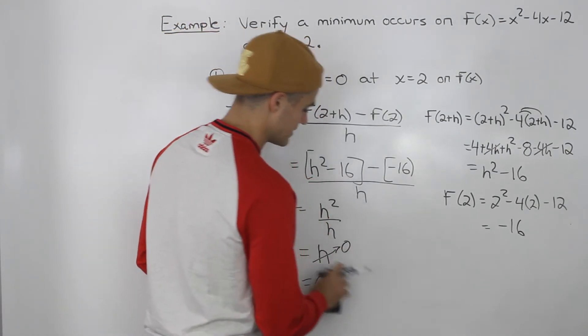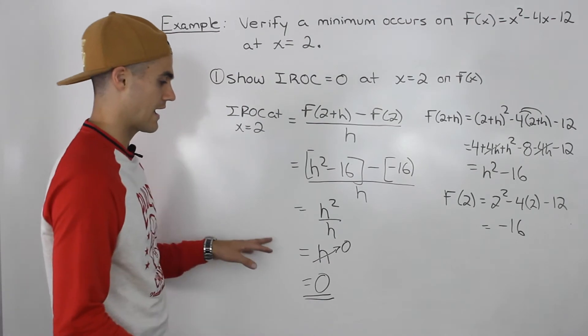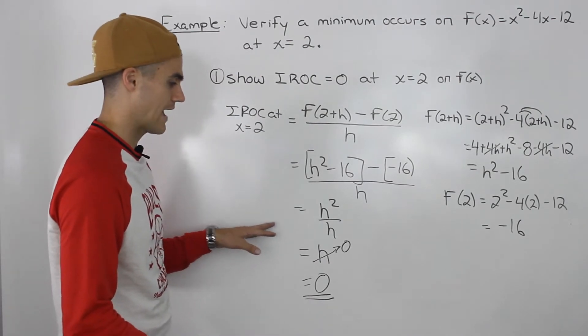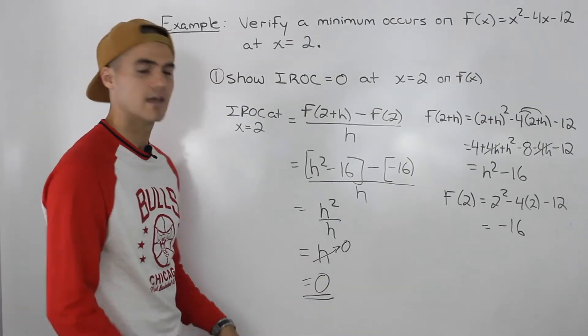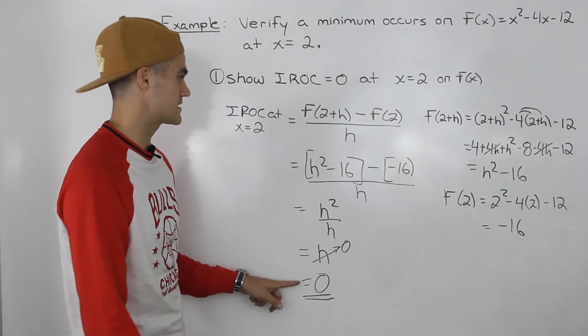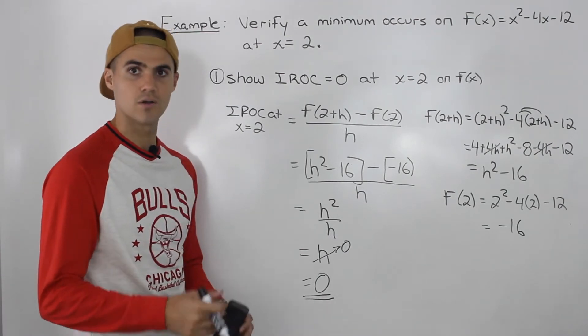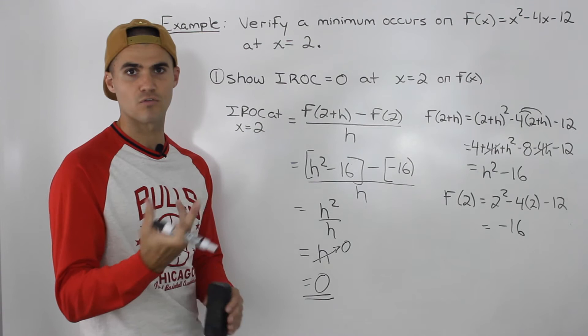If you end up with something that has h attached to all the expressions, then you know you're on the right track because the instantaneous rate of change is going to be 0 when you sub in that 0 for h.